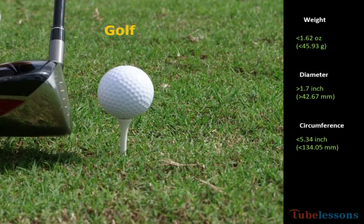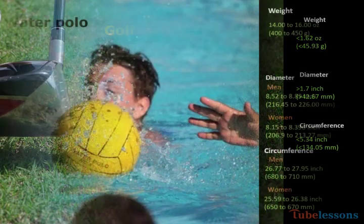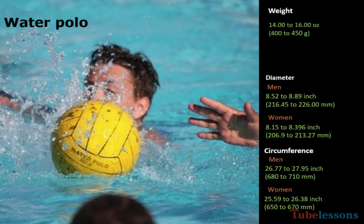Next one: golf ball. The weight of the golf ball cannot be heavier than 1.62 ounce or 45.93 grams. Diameter should be no smaller than 1.7 inch or 42.67 millimeter. Circumference should be at least 5.34 inch or 134.05 millimeter.